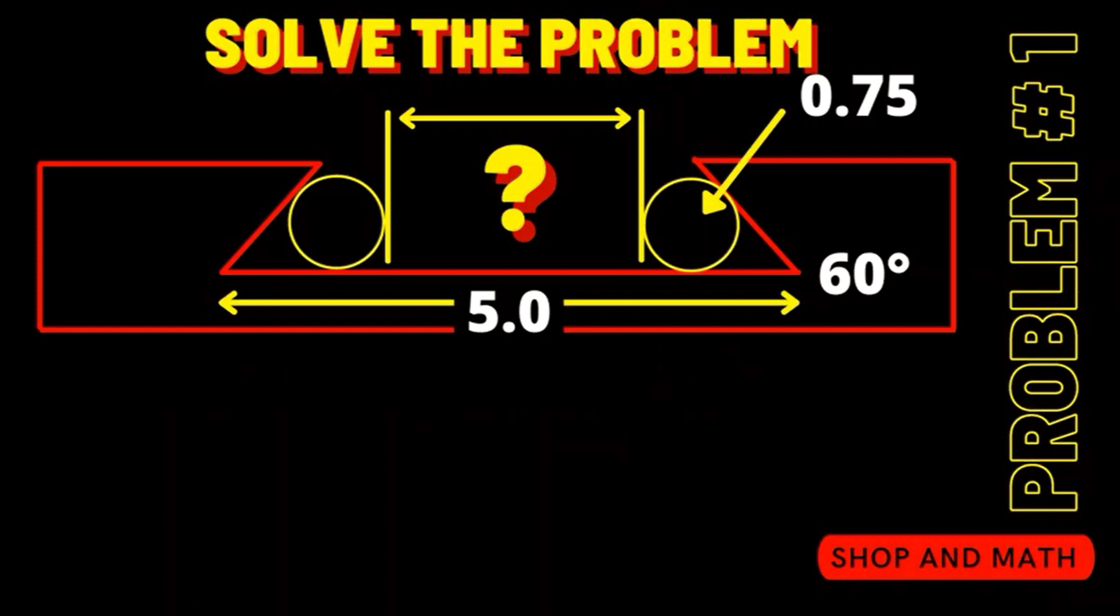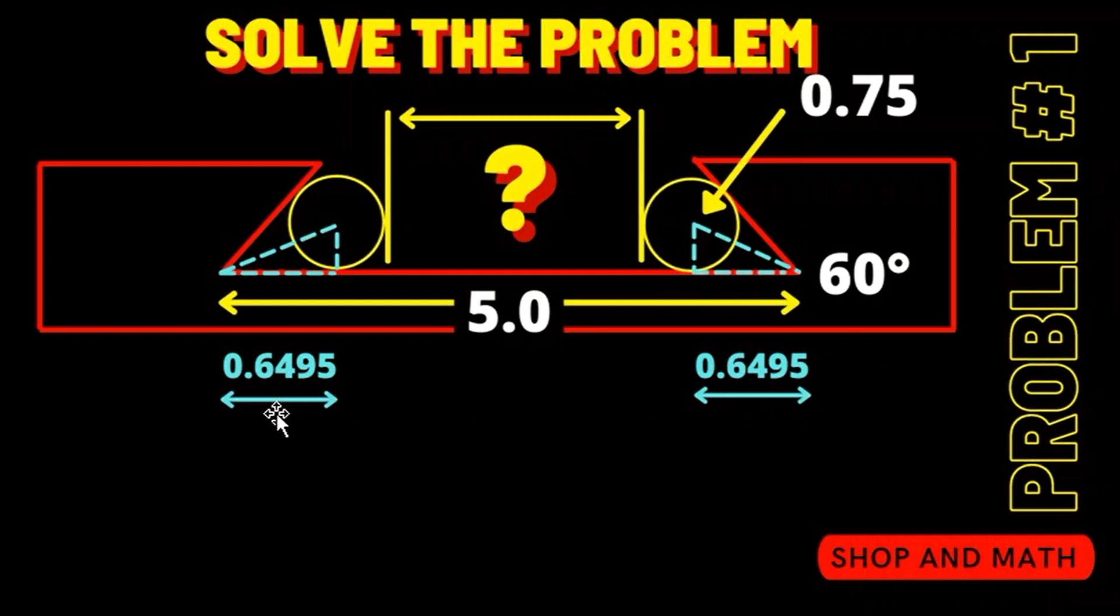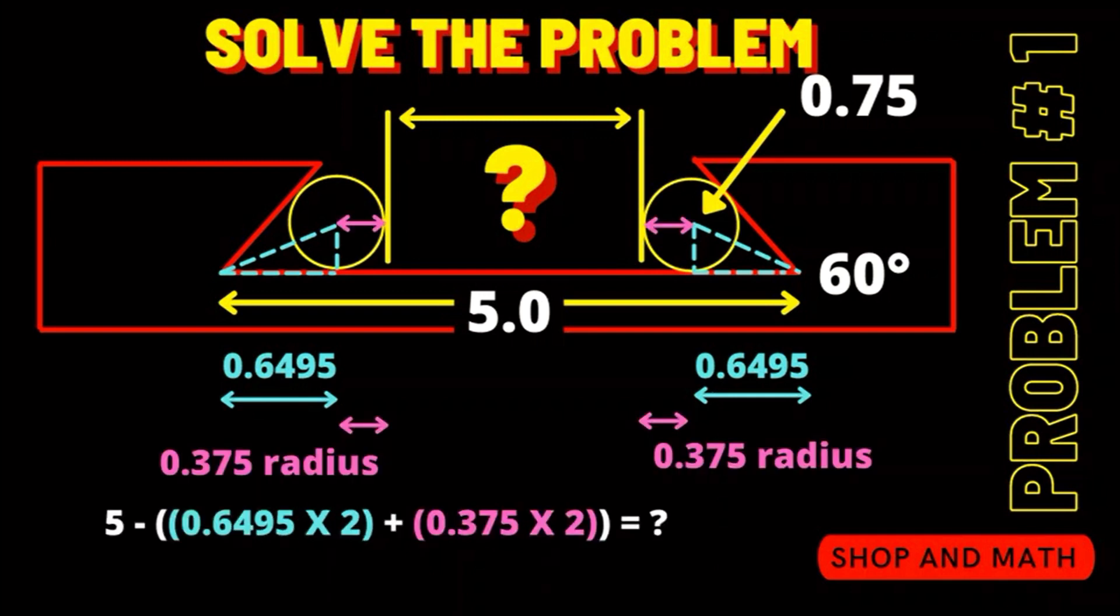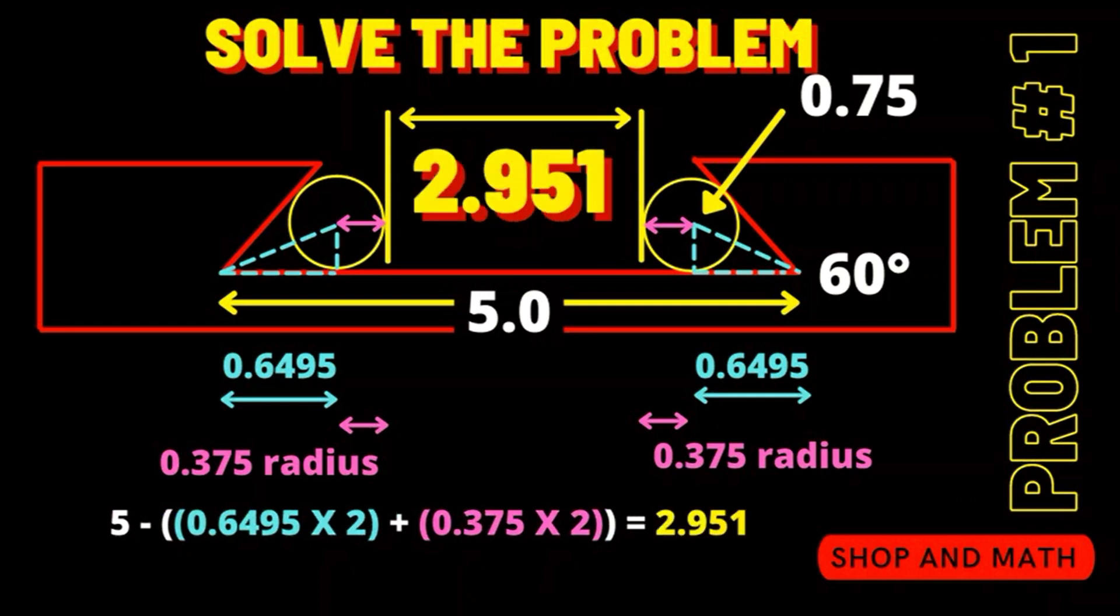Let's put this all together and solve our problem. So we have these two lengths here of 0.6495 here and here. We're going to highlight them in blue. So as our equation writes out and you don't have to do it this way you can just do straight up subtraction and addition. So we're going to go five minus bracket and then 0.6495 times two bracket plus. And then we need to add our radiuses. So it's going to be our radiuses times two with a second bracket. And we come up with a grand total of 2.951. So therefore the distance between our pins is 2.951. So that's problem number one down.